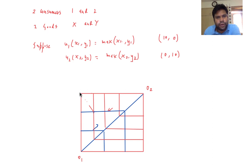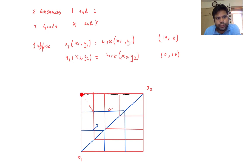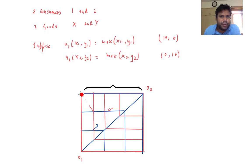Looking at the four boundaries, this point will Pareto dominate any point on this portion or this portion. Moving from here to here improves the satisfaction level of individual 2 without affecting the satisfaction level of individual 1, because this is how consumer 1's indifference curve looks through this point. So any point here is Pareto dominated by this corner point. Similarly, any point here is Pareto dominated by the other corner point, and the same holds symmetrically.